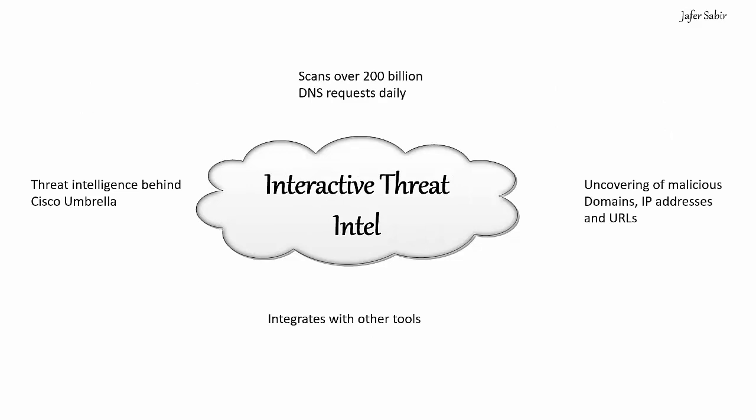The Interactive Threat Intel feature is powered by Cisco's Talos threat intelligence research team, which provides threat intelligence feeds. It scans over 200 billion requests daily and detects malicious domains, IP addresses, and URLs before they are even used in malicious activity. It also has the ability to integrate with other security orchestration tools, such as Cisco's own SecureX security platform, which is included as part of the Umbrella subscription. SecureX is a unified console to view data across all Cisco security solutions — essentially a threat detection and incident response tool.